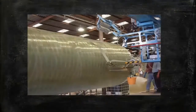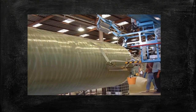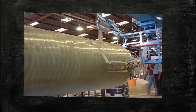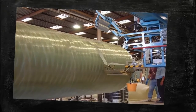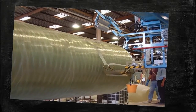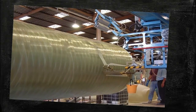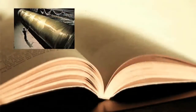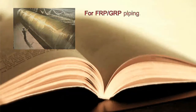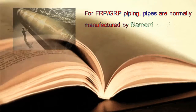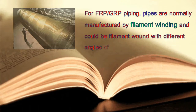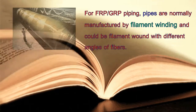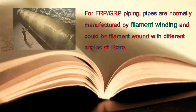Let us see how FRP piping is manufactured with help of this visual. For FRP or GRP piping, pipes are normally manufactured by filament winding and could be filament wound with different angles of fibers.